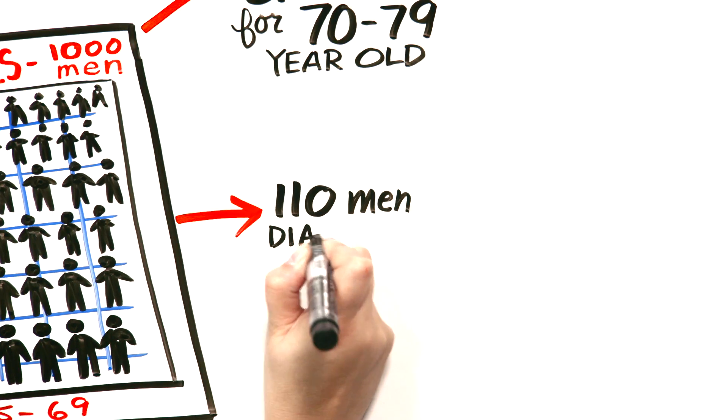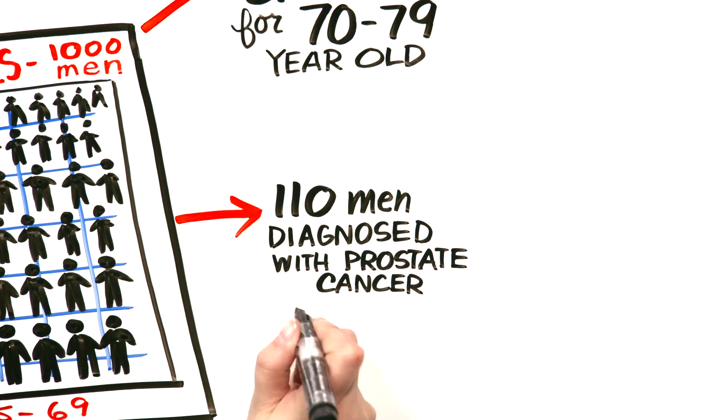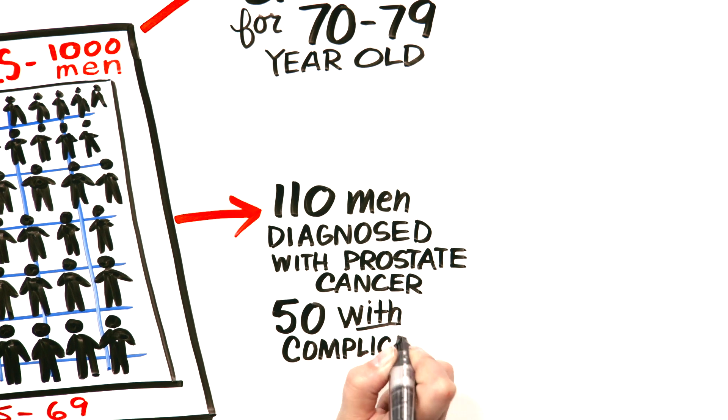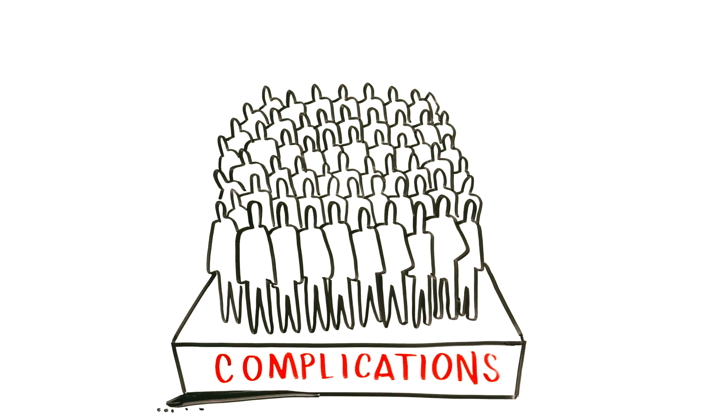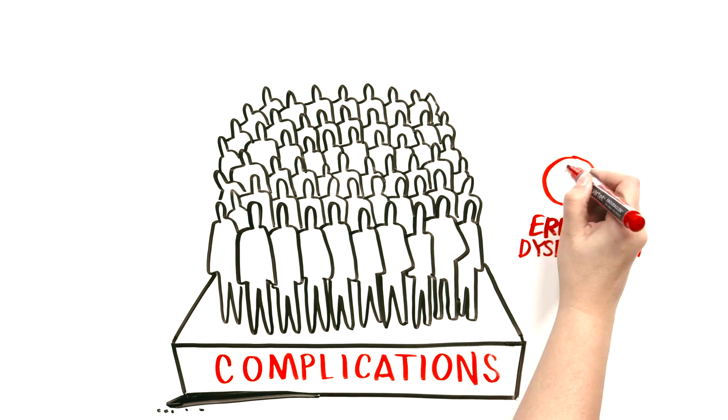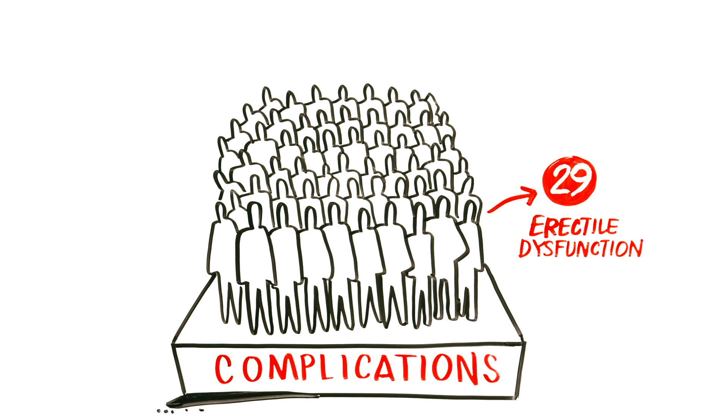110 men would be diagnosed with prostate cancer. If treated, about 50 of these men would have had a complication from treatment, which is usually surgery or radiation therapy. For example, erectile dysfunction in at least 29 men and likely more depending on how you define ED.